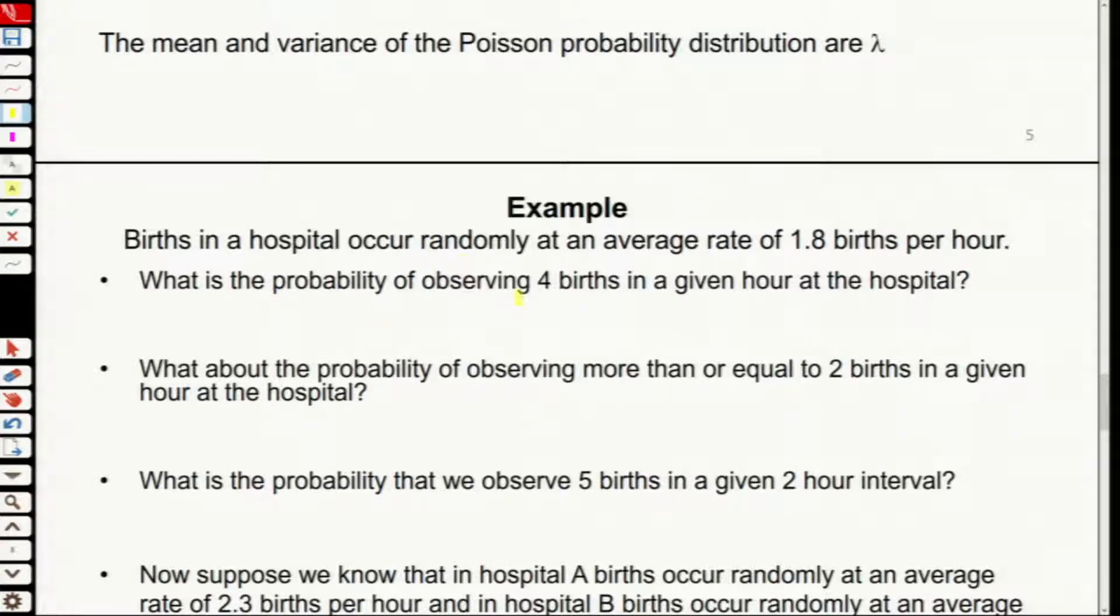What is the probability to observe four births in a given hour at a hospital? Let's use X to be the number of births in a given hour. The mean rate, lambda, equals 1.8.